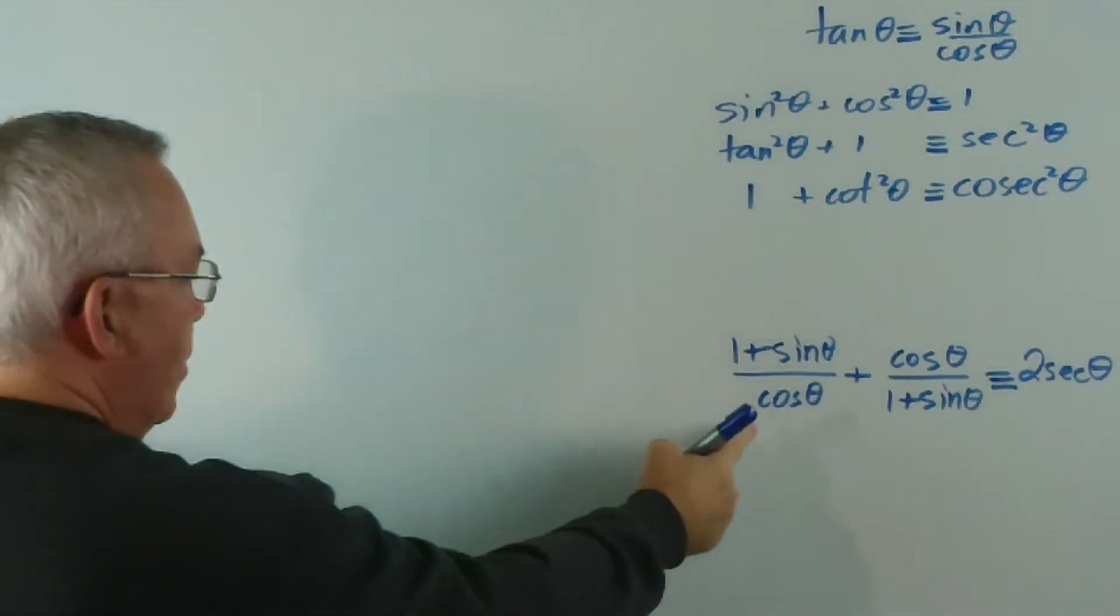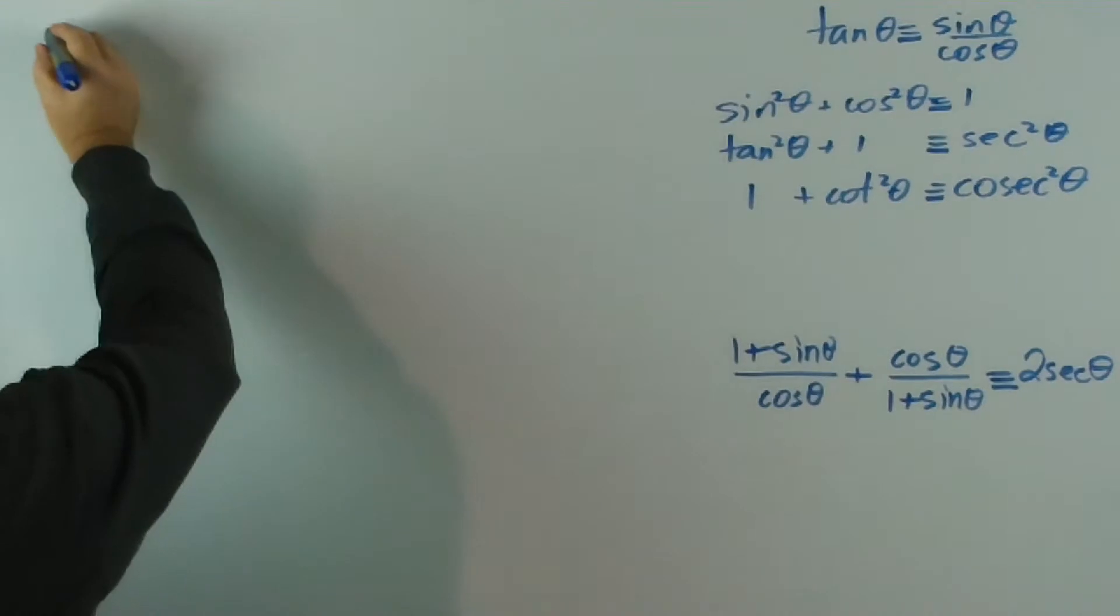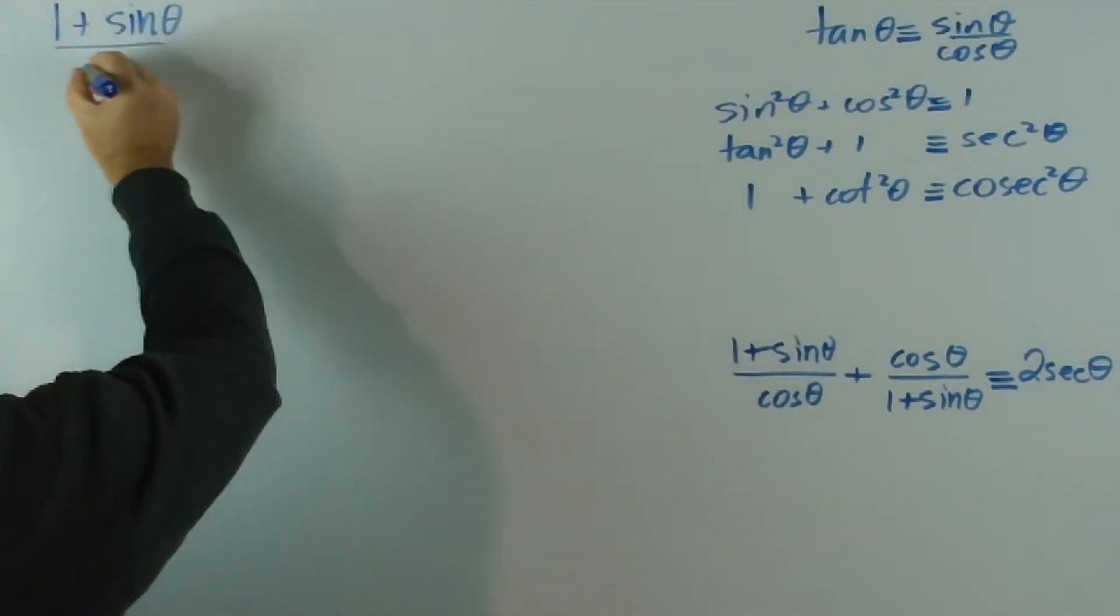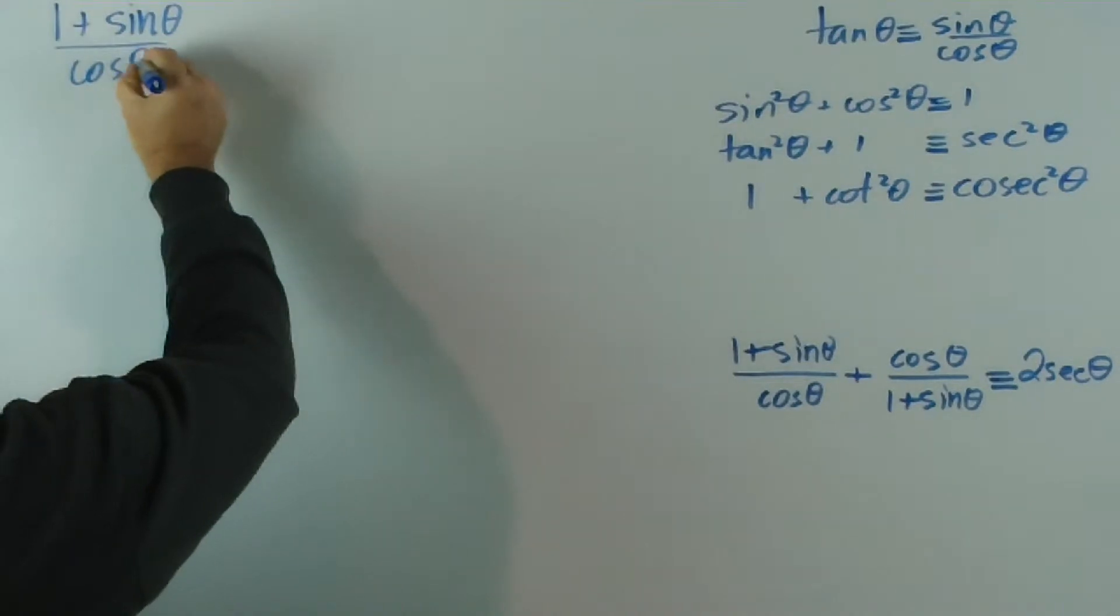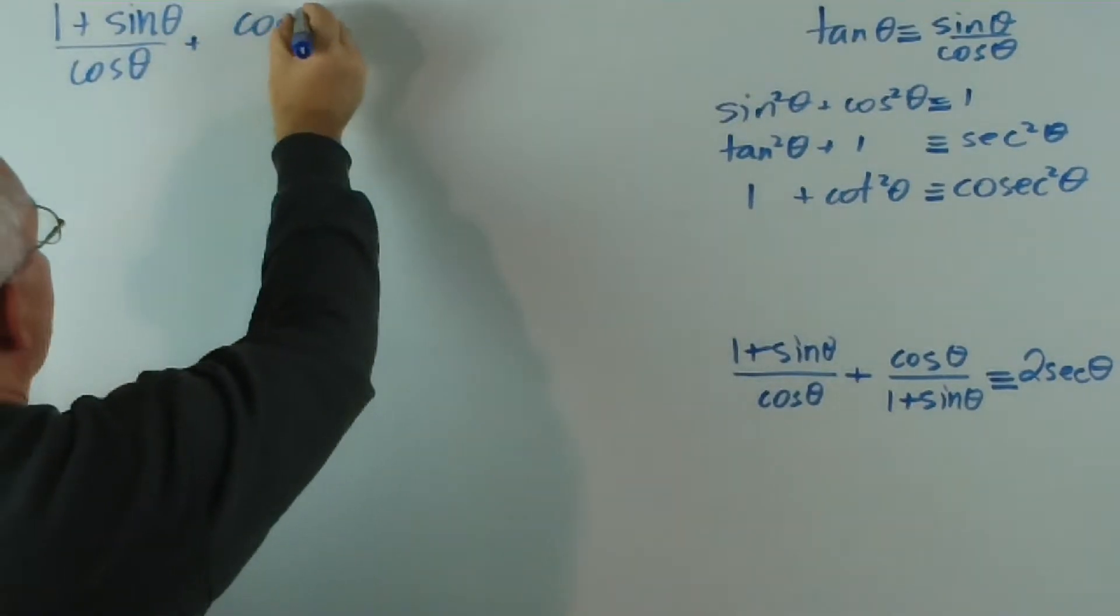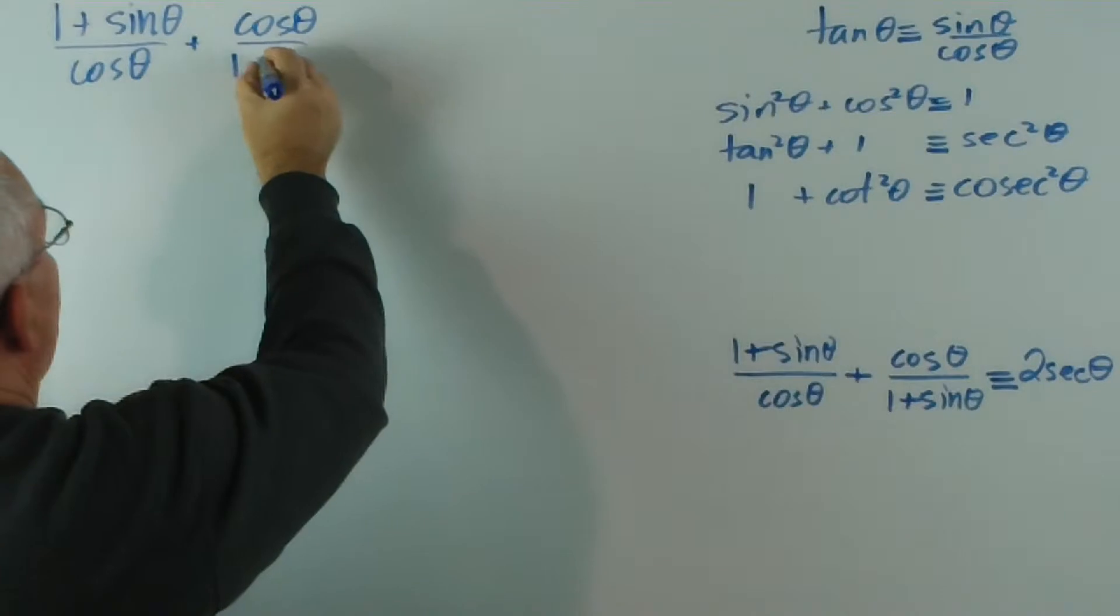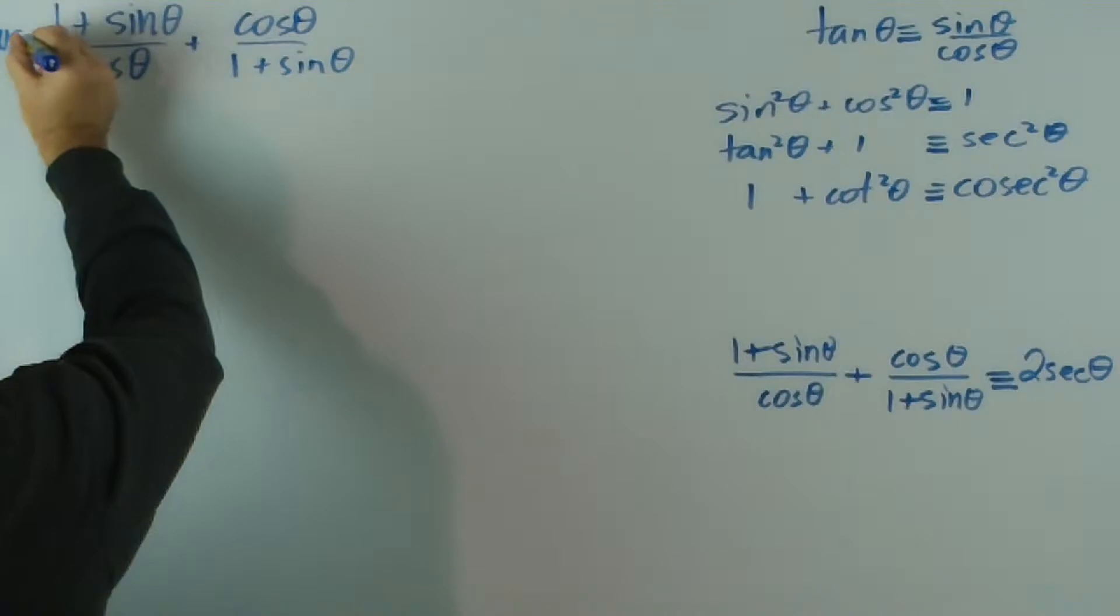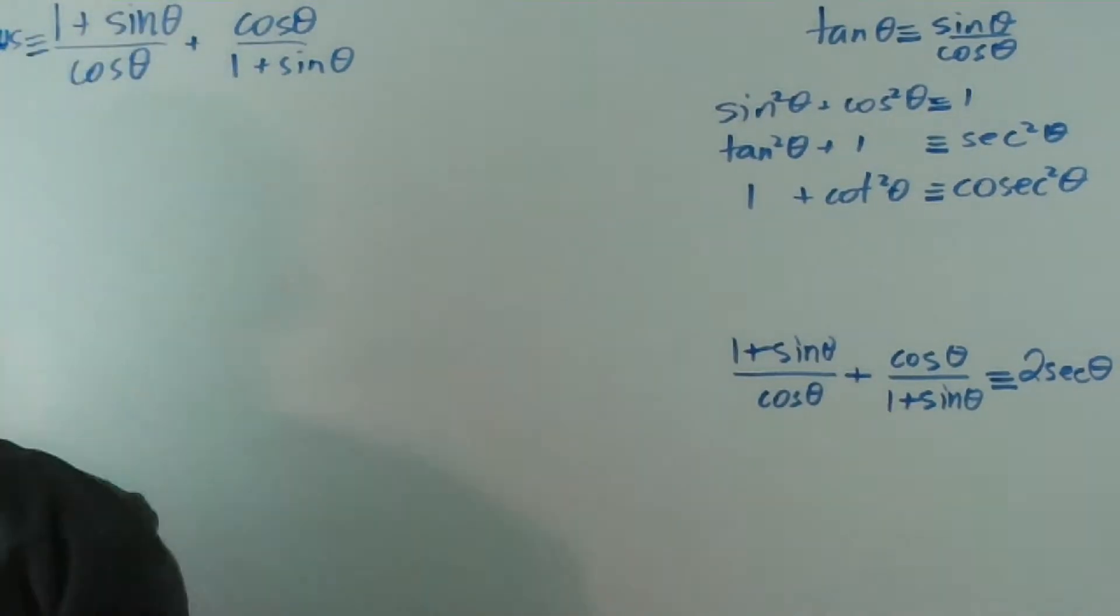So let's write it up. 1 plus sine theta over cosine theta plus cos theta over 1 plus sine theta. And we really should have said left-hand side is equal to, or is identical to.